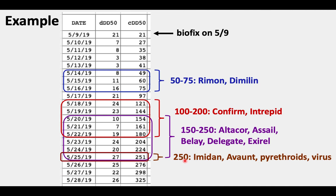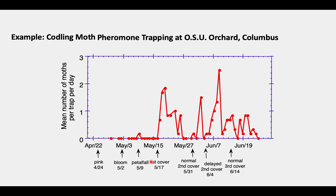And finally, if you were going for the 250 degree days for Imidan, Avant, pyrethroids, or virus insecticides, it would have been by the 25th of May.